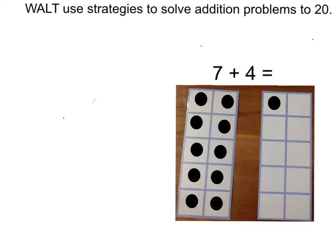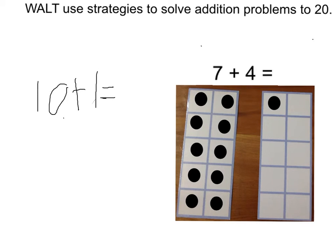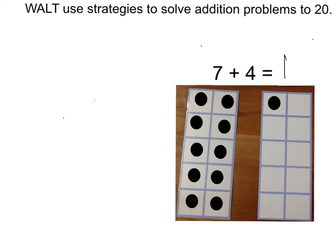Now I have ten plus one. Ten plus one equals eleven. Seven plus four equals eleven.